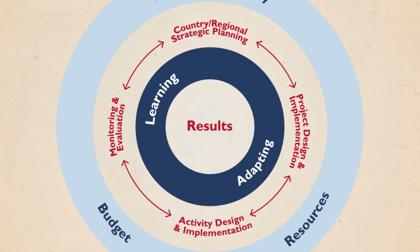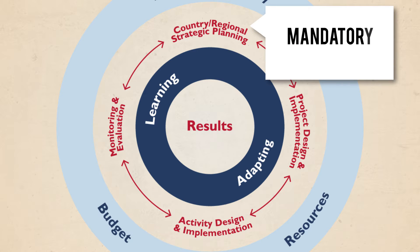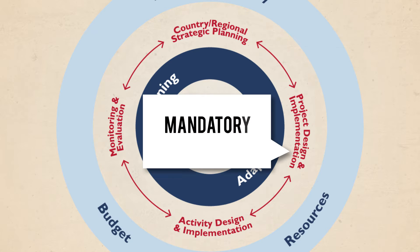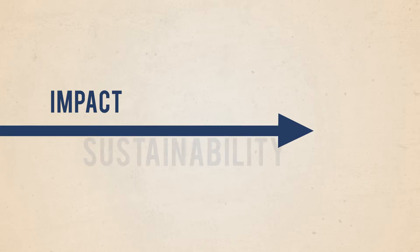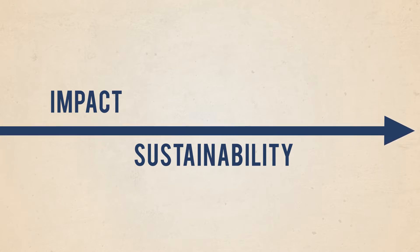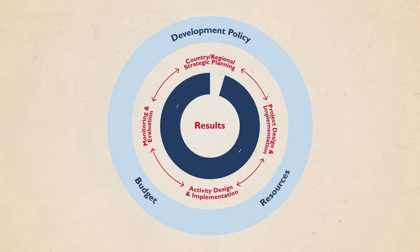Climate risk management became mandatory for all new USAID strategies in October 2015, and for all new projects and activities in October 2016, reflecting the agency's desire to improve the impact and sustainability of its investments.